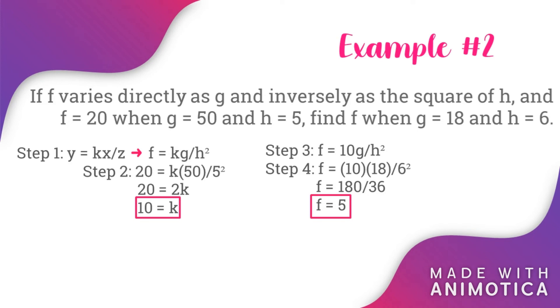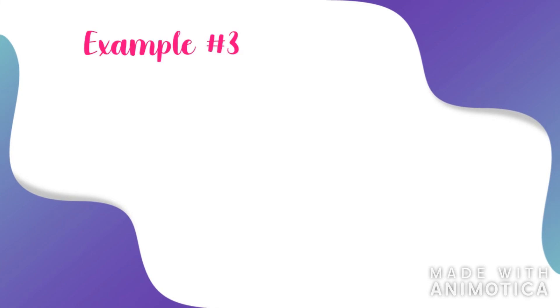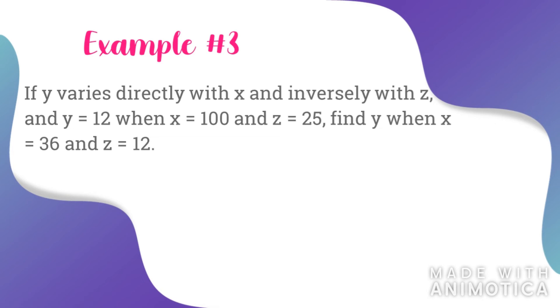And for our last example, example number three: if y varies directly with x and inversely with z, and y is equal to 12 when x is equal to 100 and z is equal to 25, find y when x is equal to 36 and z is equal to 12. Step number one: write the equation. We have y is equal to kx all over z.